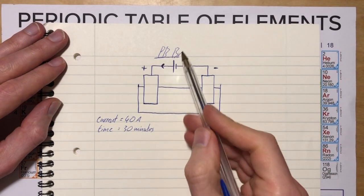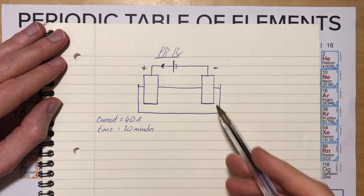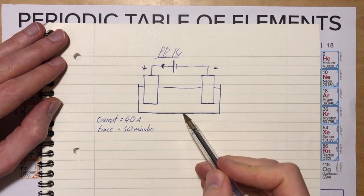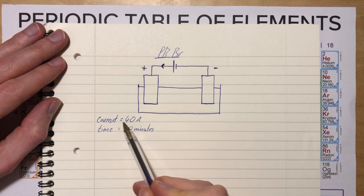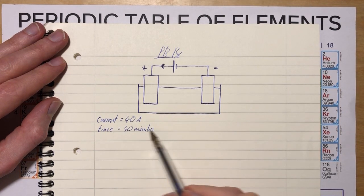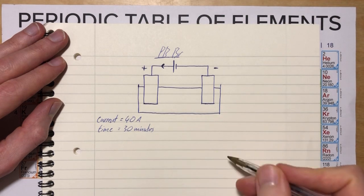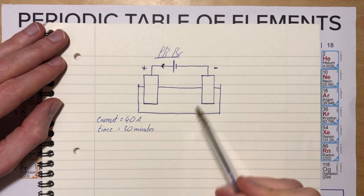Suppose we're electrolyzing lead bromide - molten lead bromide, because it's a solid at room temperature. We pass a current of 40 amps through it for 30 minutes, and we want to find out how much lead we end up producing.